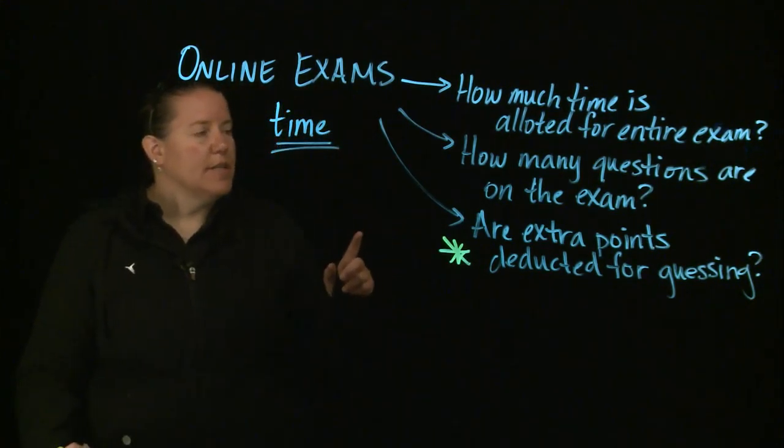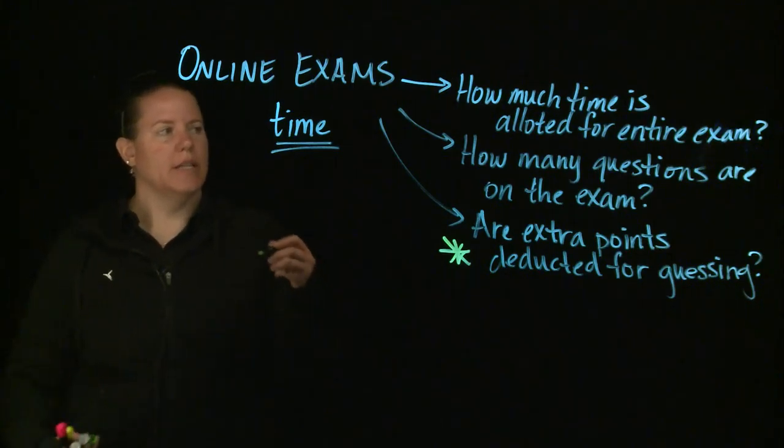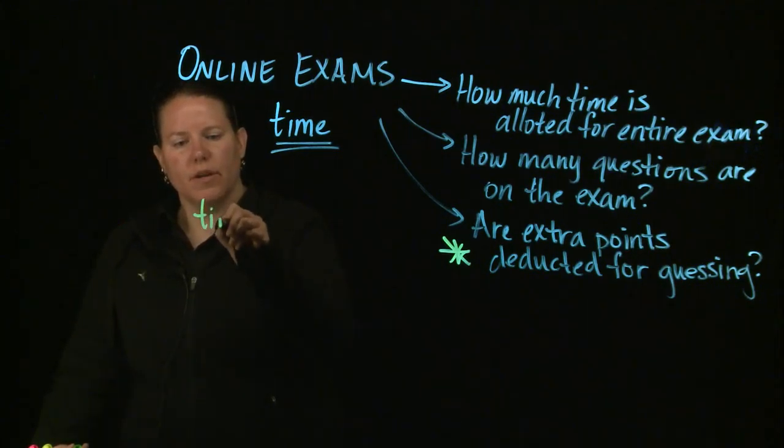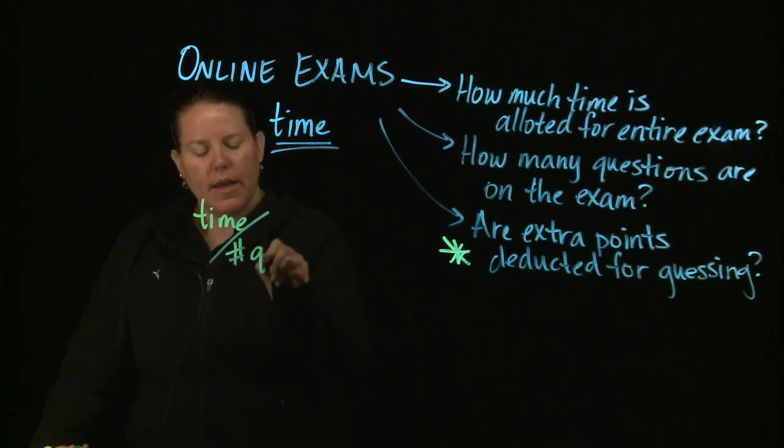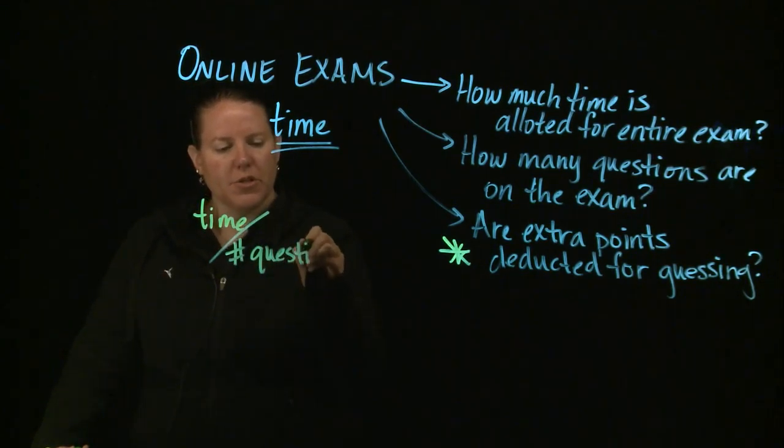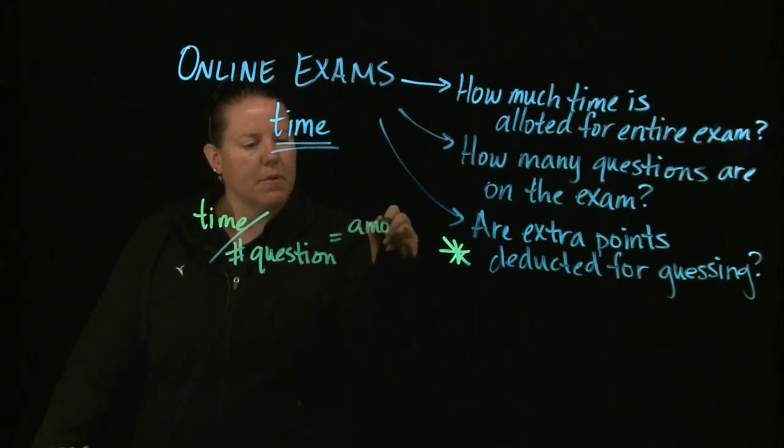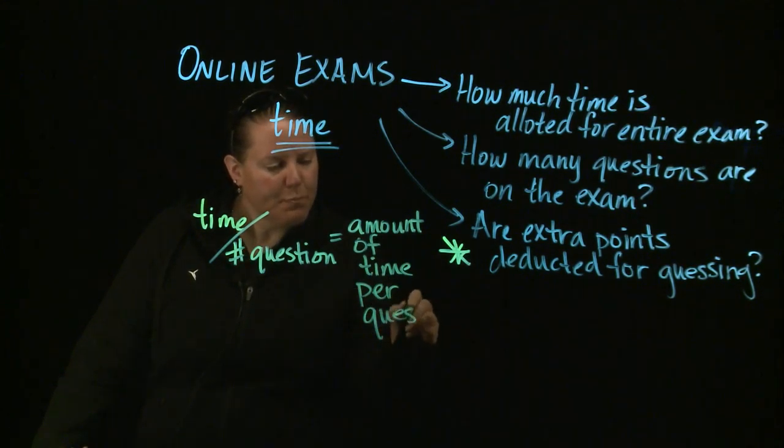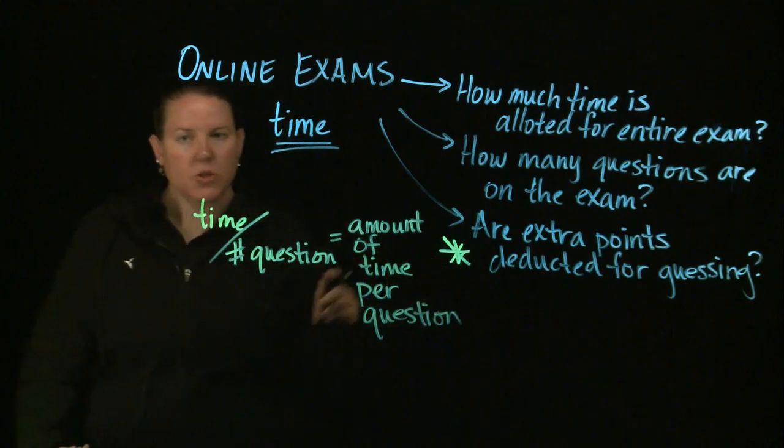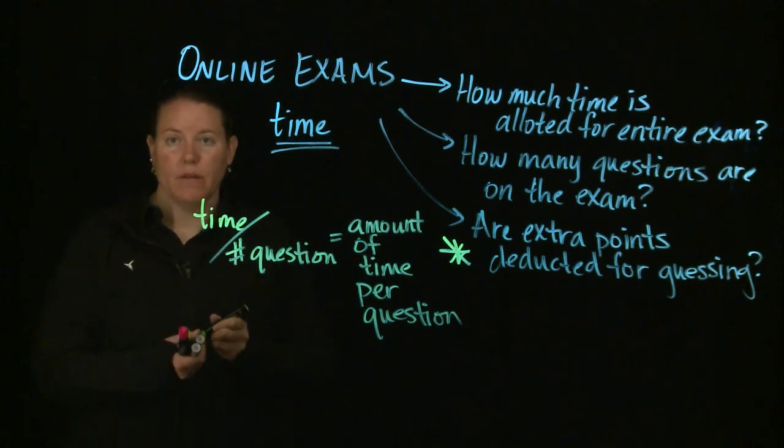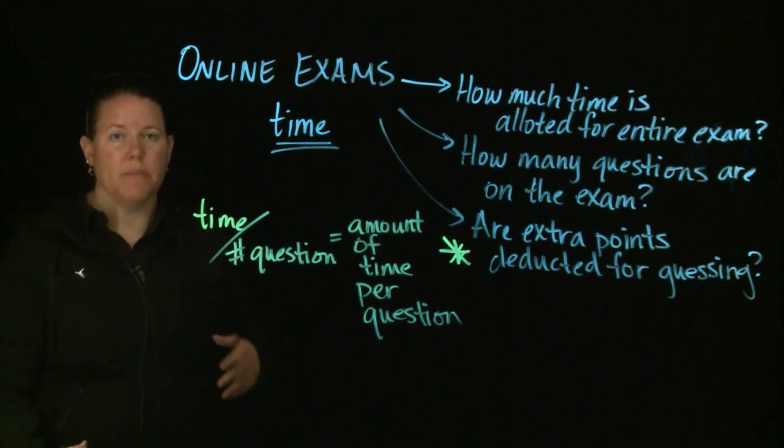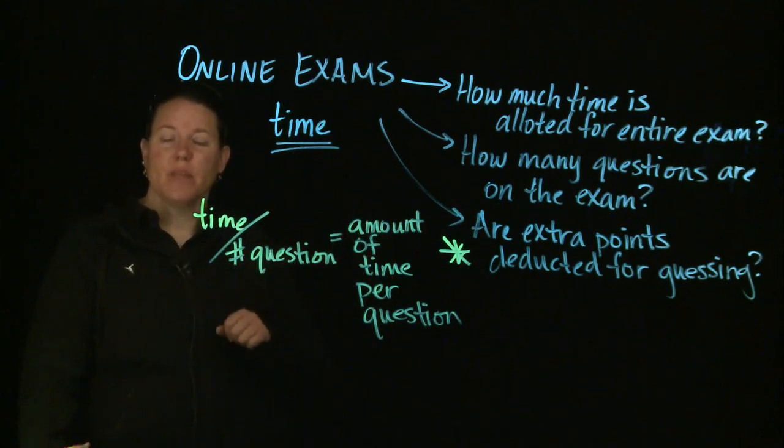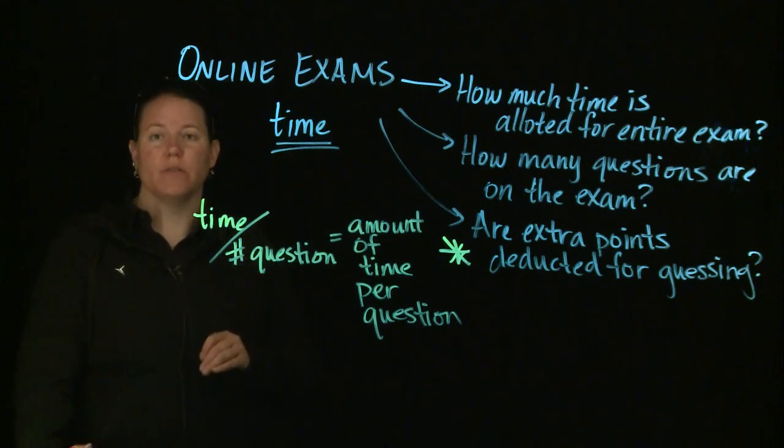If you know how much time is allotted for the entire exam and you know how many questions are on the exam, then you're going to take the entire time and divide it by the number of questions. And that's going to give you your amount of time per question. Which means that you need some kind of clock or something that helps you keep track of time as you're going through this. Usually there's a timer in the midst of the exam, like on the same screen there's a timer. Do not hide that timer. You need that timer.